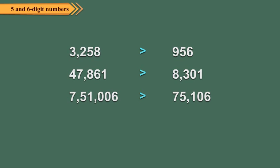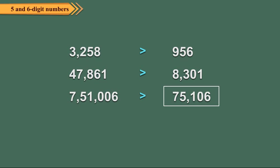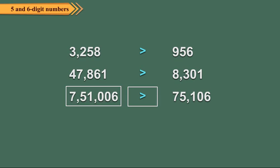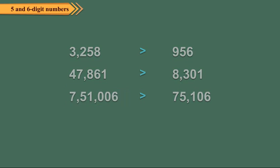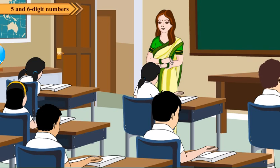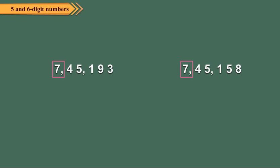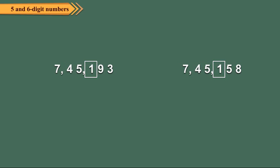751006 has 6 digits, while 75106 has 5 digits, so 751006 is greater. When the numbers have an equal number of digits, we start comparing the left-most digits. If they are equal, we compare the next digits, and continue until we come across unequal digits at the corresponding places.